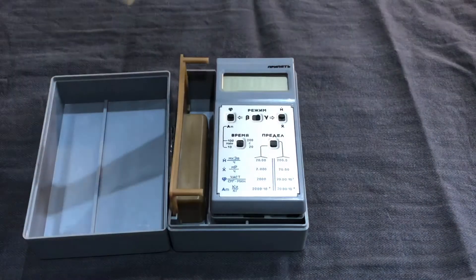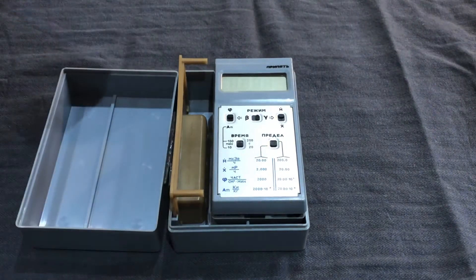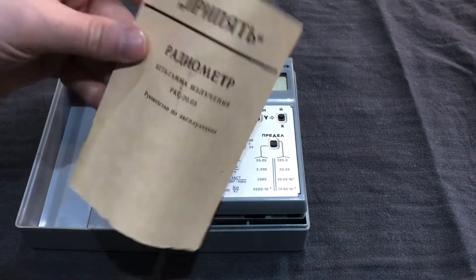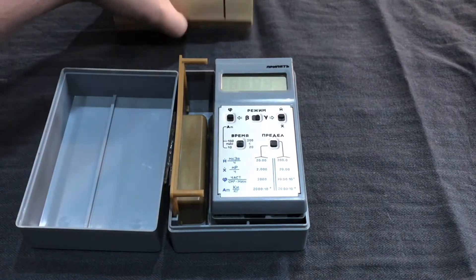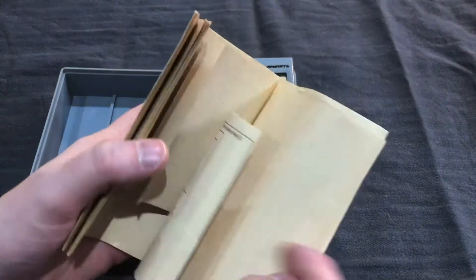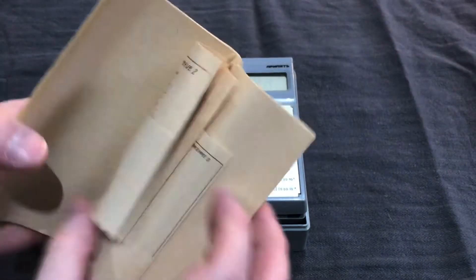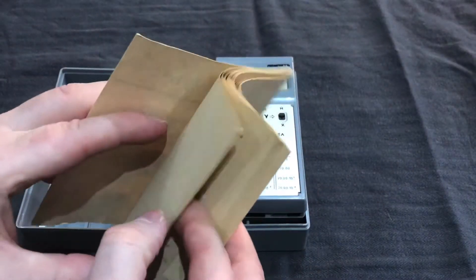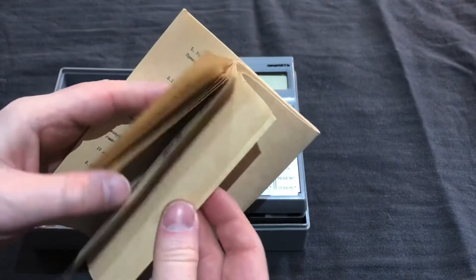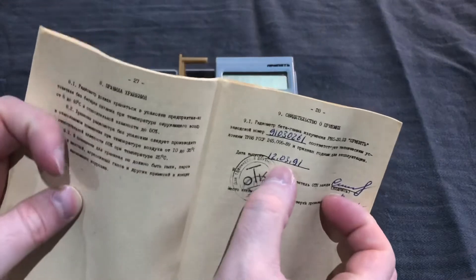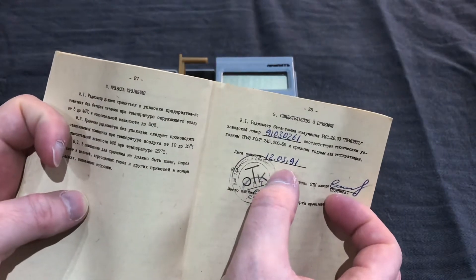So inside this quite nice little storage container, we have instruction manual in Russian. Very comprehensive instruction manual. It's got wiring diagrams, everything in here, which is really interesting. And if I remember rightly, it has the date of its last inspection, which I think was 1991. I think it's at the back. Yeah, it was on the 12th of the 3rd, 1991.